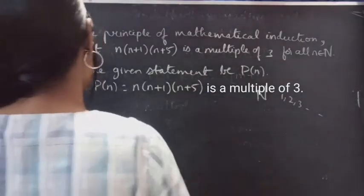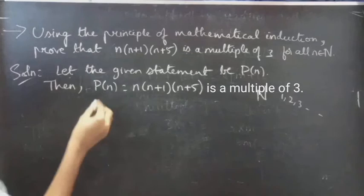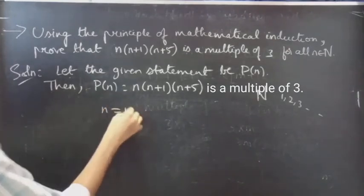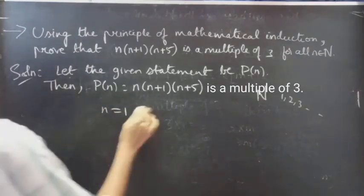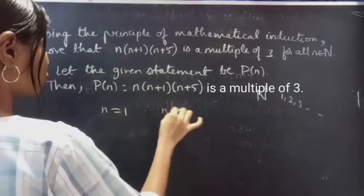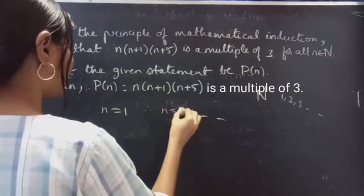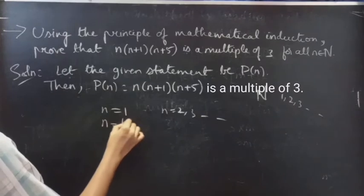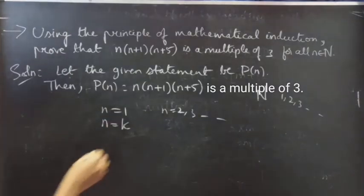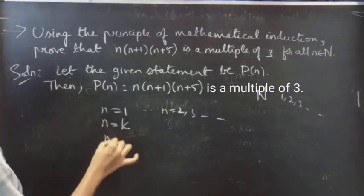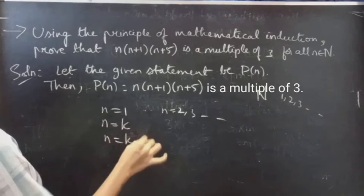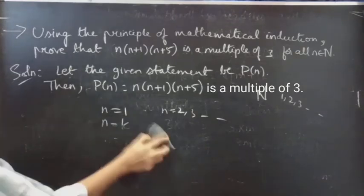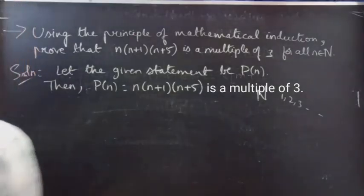For n=1, we have to show that the given statement is true for n=1. We can also check for n=2, 3, and so on. We will assume that the given statement is true for n=k, and finally we will show that the statement is true for n=k+1.